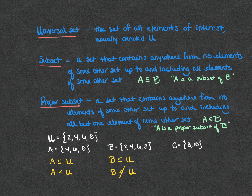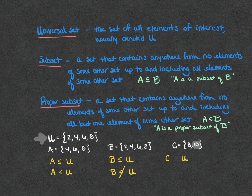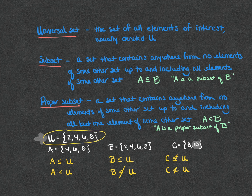Looking at set C compared to set U, set C has the element 10 in it. Notice that 10 is not at all in set U. So C cannot be a subset of set U because C contains something not in U. Similarly, C is also not a proper subset of set U. We can only use items from the universal set to create subsets and proper subsets of U.